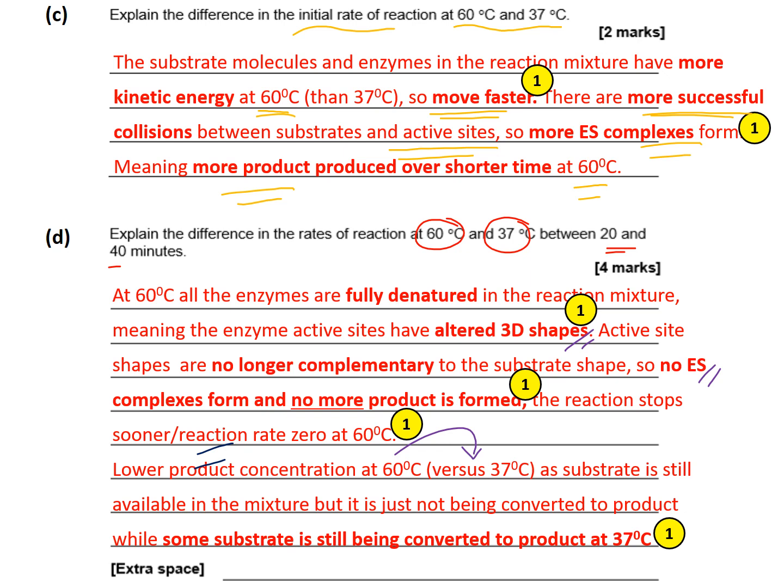An important note: if the optimum temperature were 37°C and we conducted the experiment at 40°C — that's above the optimum — it does not mean all the enzymes are fully denatured. It just means they've started to become denatured. There may still be some successful collisions, ES complexes, and product being formed, just fewer compared to 37°C. At 60°C, all enzymes are fully denatured and will not work — no product will be formed. Crucially, once an enzyme is fully denatured, it cannot revert to its original shape and will never work again. Even adding more substrate to the reaction mixture at 60°C after 20 minutes would produce no more product — the concentration would remain fixed.